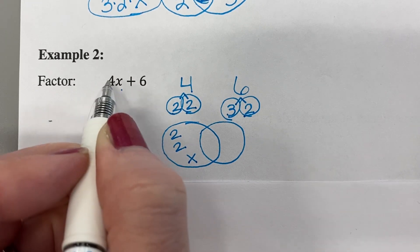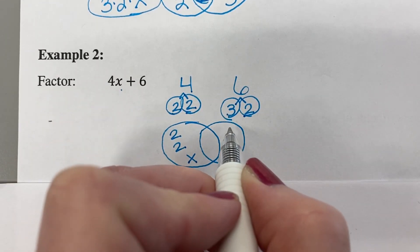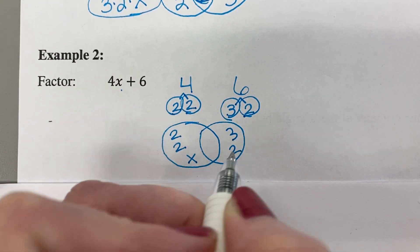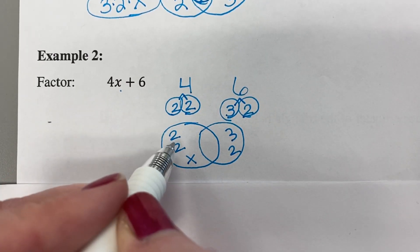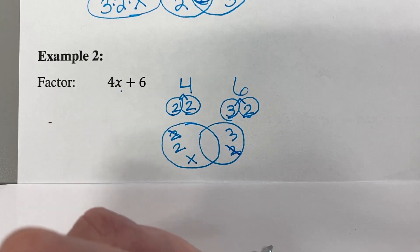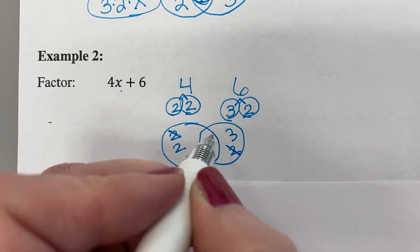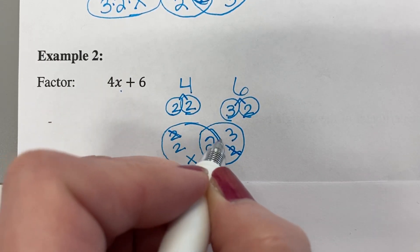And then over here, we have the 3 and the 2. Okay, what can we cross off? What's the same? Well, we have a 2 here that matches a 2 here. And that's it. That's all we have in common. So our GCF is 2.